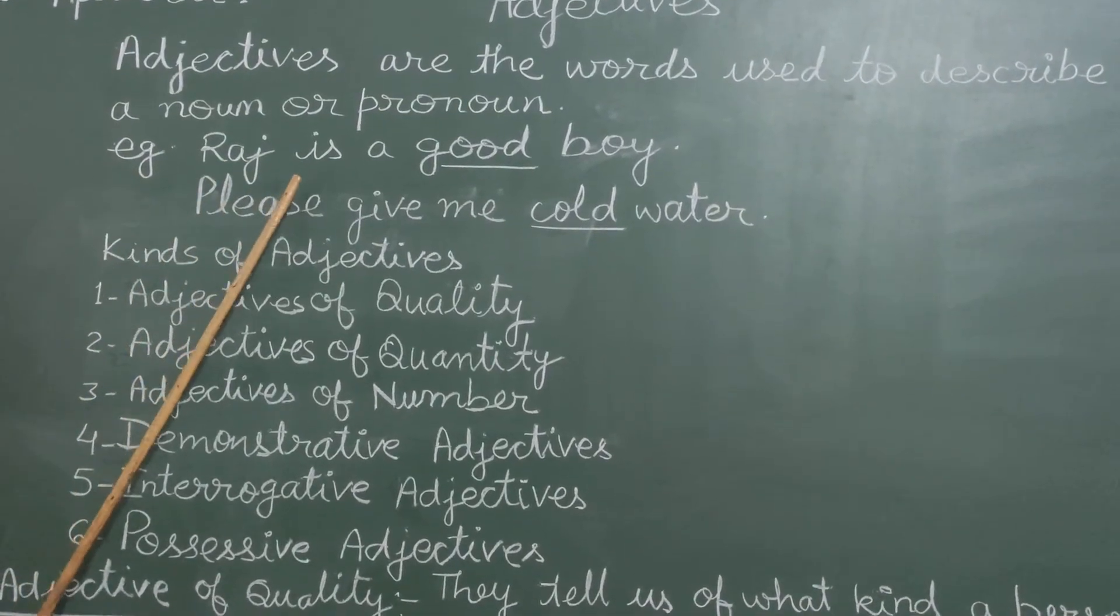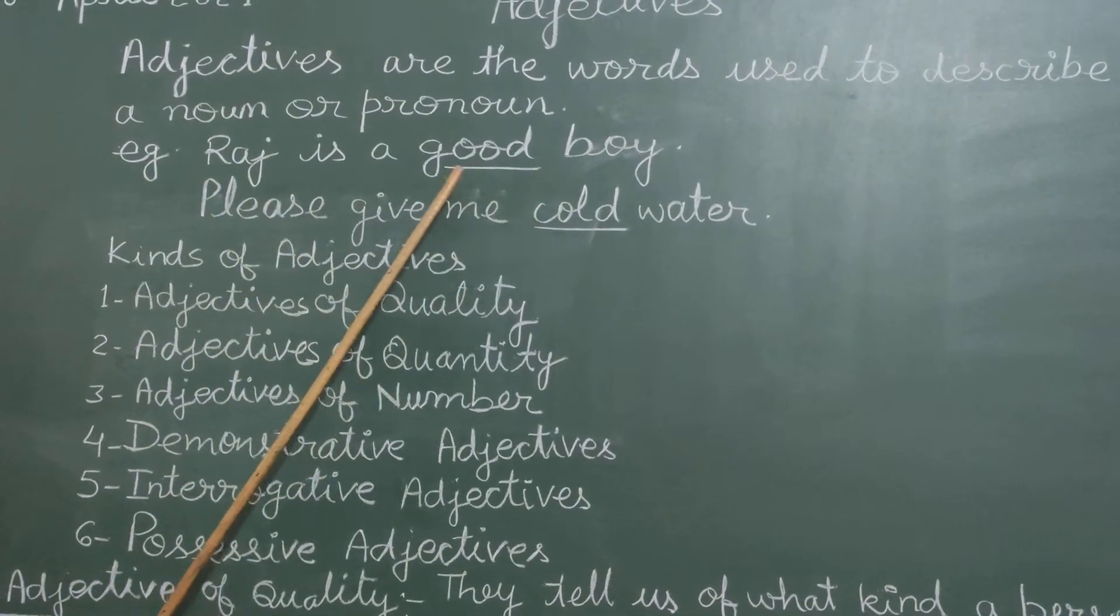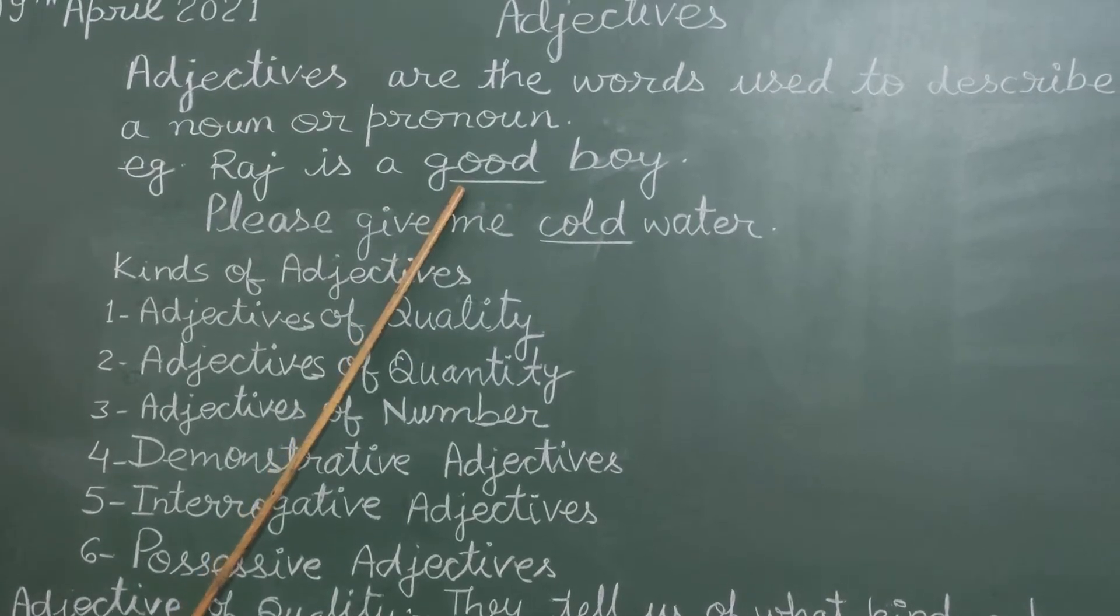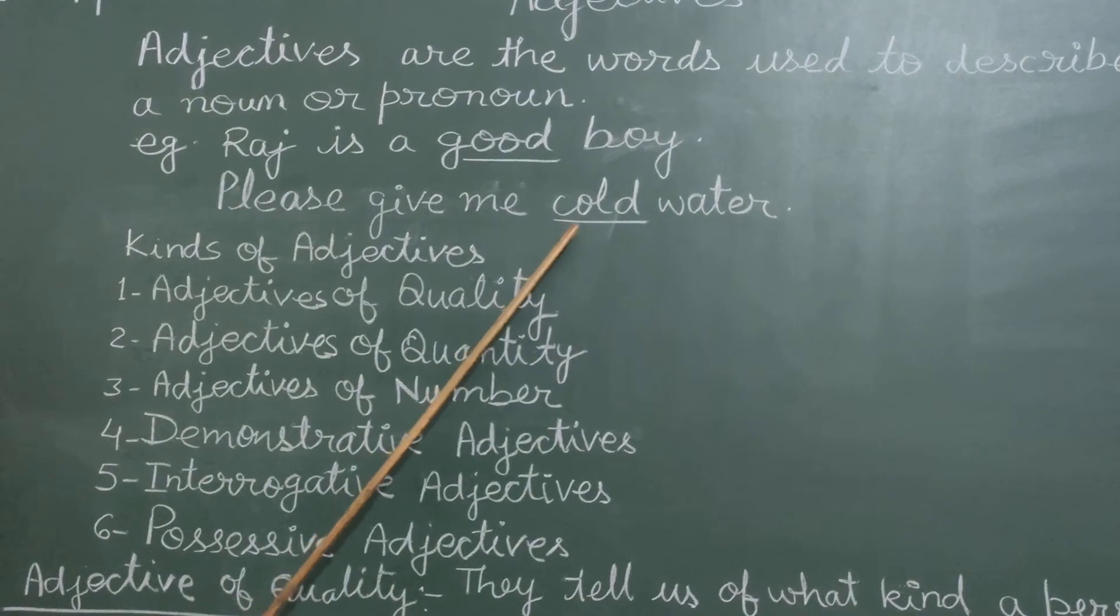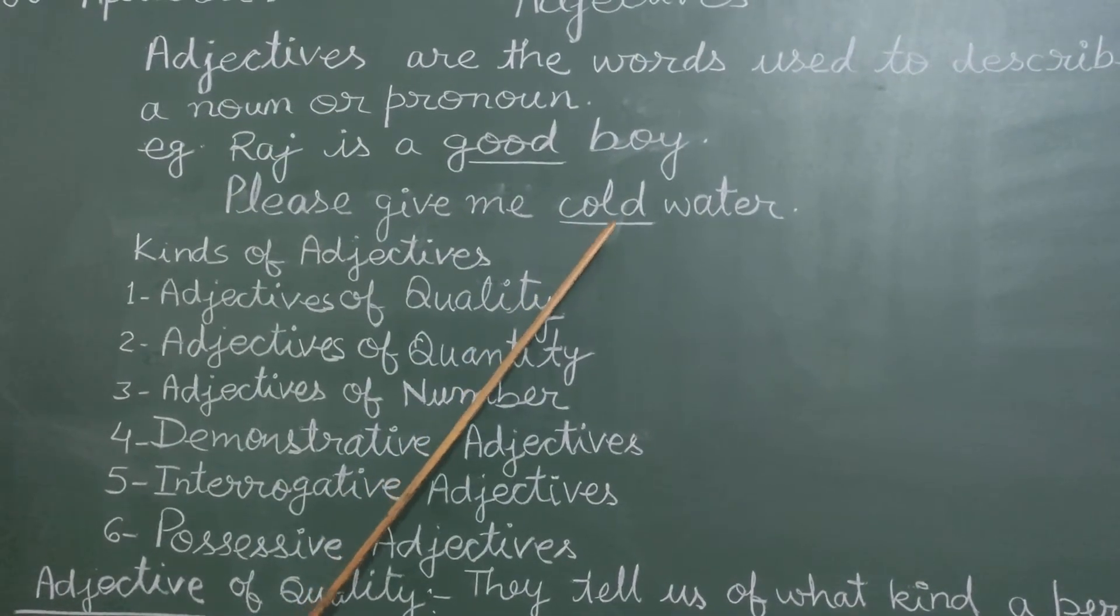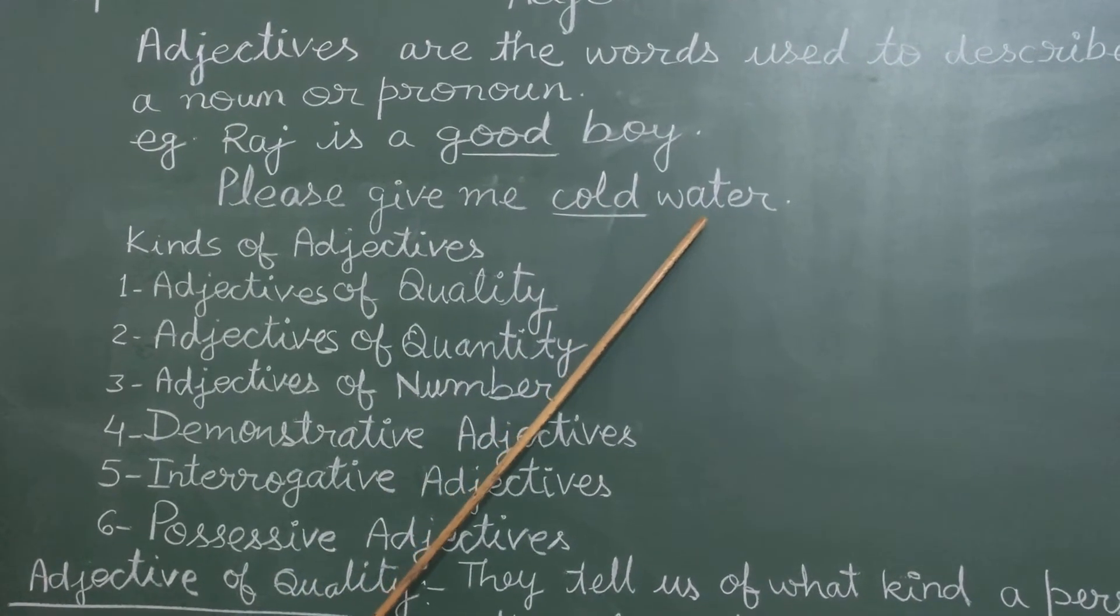Example: Raj is a good boy. Here good is adjective. Please give me cold water. Here cold is adjective, describing noun water.